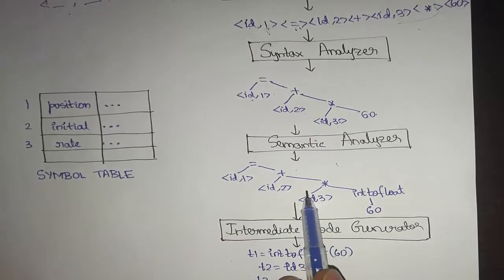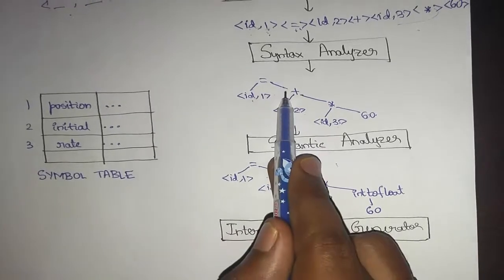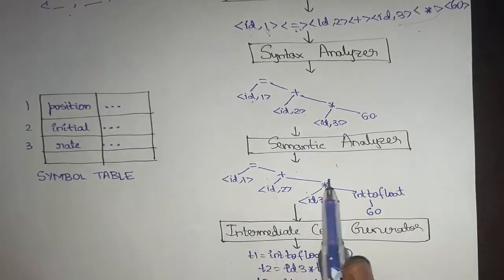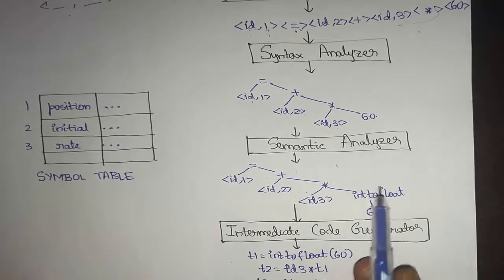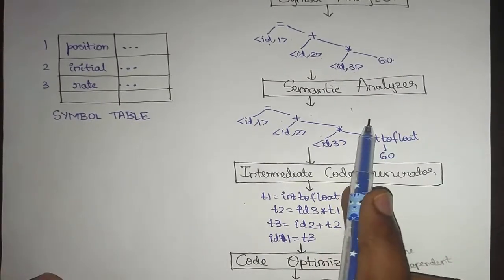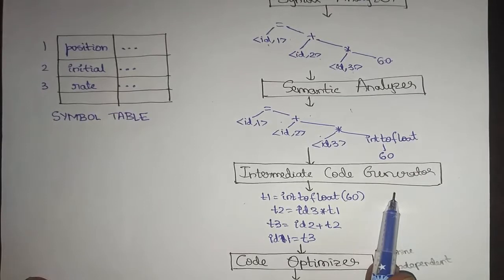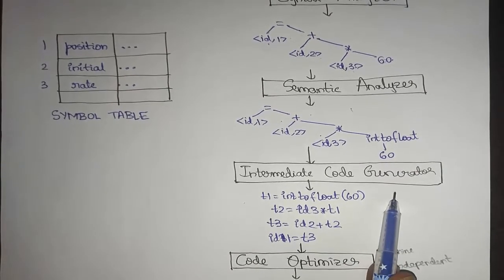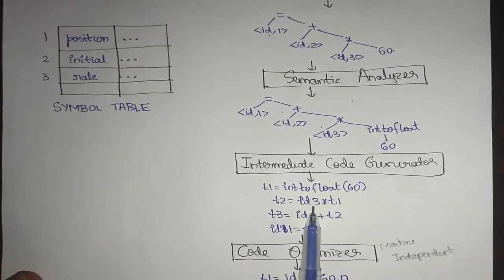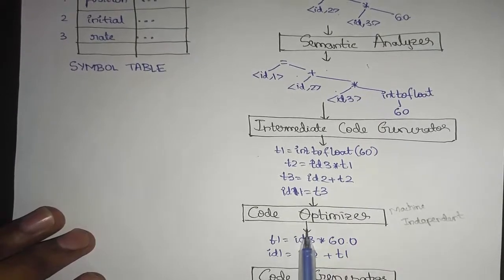The annotated syntax tree is the same as the syntax tree except that necessary conversions or removal of redundancies are performed. The annotated syntax tree is next given to the intermediate code generator, which generates a 3-address code — the necessary instruction code for the machine.